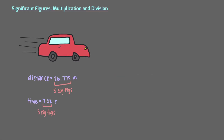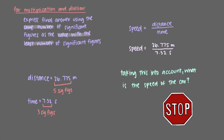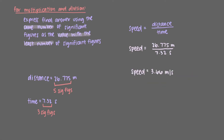Knowing the distance it traveled and the amount of time it took, we can now calculate the speed of the car. Speed is equal to distance over time. For multiplication and division, we express our final answer using the same number of significant figures as the value with the least number of significant figures. The value with the smallest number of significant figures is our given time, which means that our final answer must have the same number of significant figures as this value — three of them.